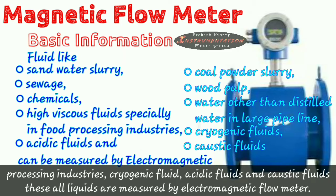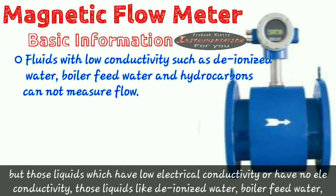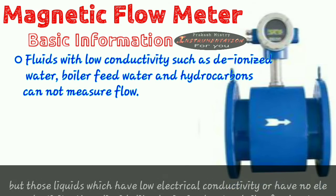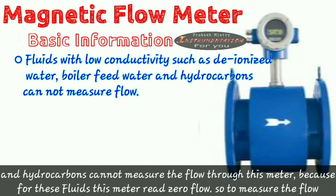These all liquids are measured by electromagnetic flow meter. But those liquids which have low electrical conductivity or have no electrical conductivity, like deionized water, boiler feed water, or hydrocarbons, cannot measure the flow through this meter.